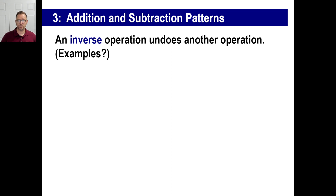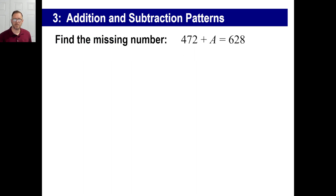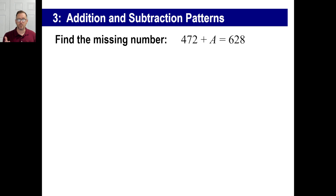Inverse operations. An inverse means the opposite. The inverse of addition is subtraction; the inverse of multiplication is division, and so on — it undoes the operation. So you will see problems like this: find the missing number, 472 plus A equals 628. Rather than looking at these as giant numbers to piddle around with, just turn this into a real easy problem for yourself.